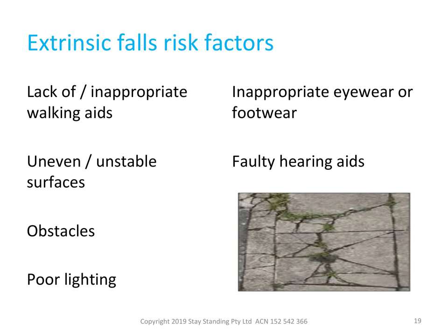Think of extrinsic risk factors as being outside of our own bodies. These could include whether we use a walking aid, the surfaces we walk on, obstacles in our environment, the level of lighting, our glasses, hearing aids if we use them, and footwear. Extrinsic risk factors are usually easier to change than intrinsic risk factors. We can improve some intrinsic risk factors, like doing balance and strength exercise or having regular checks of our vision and medications.